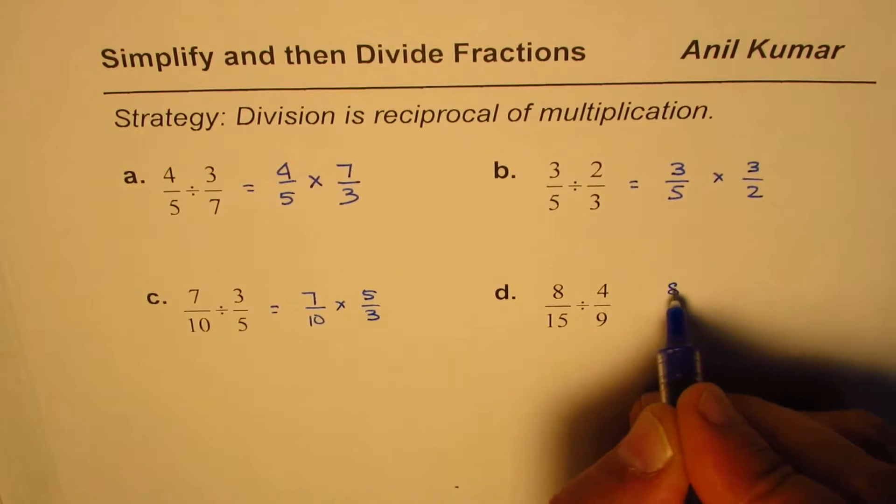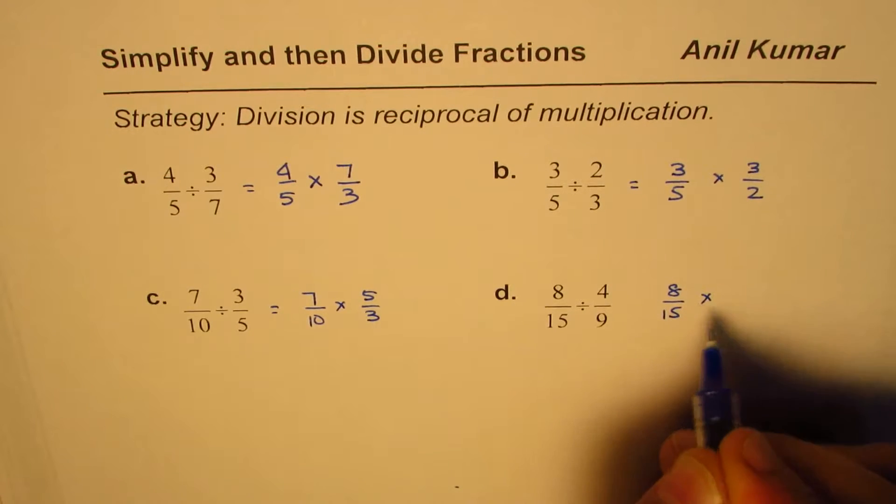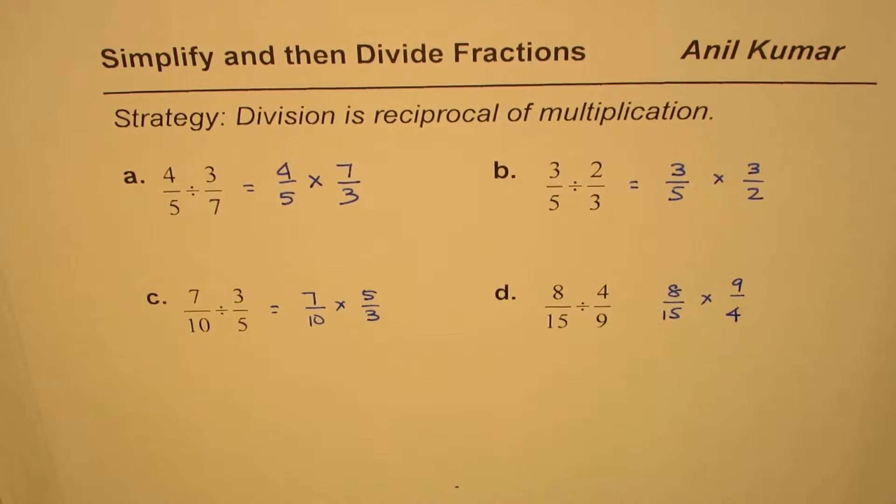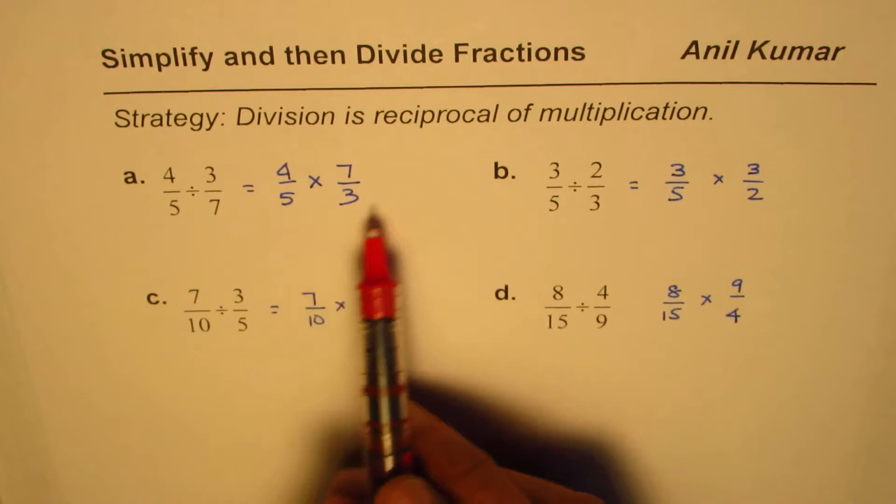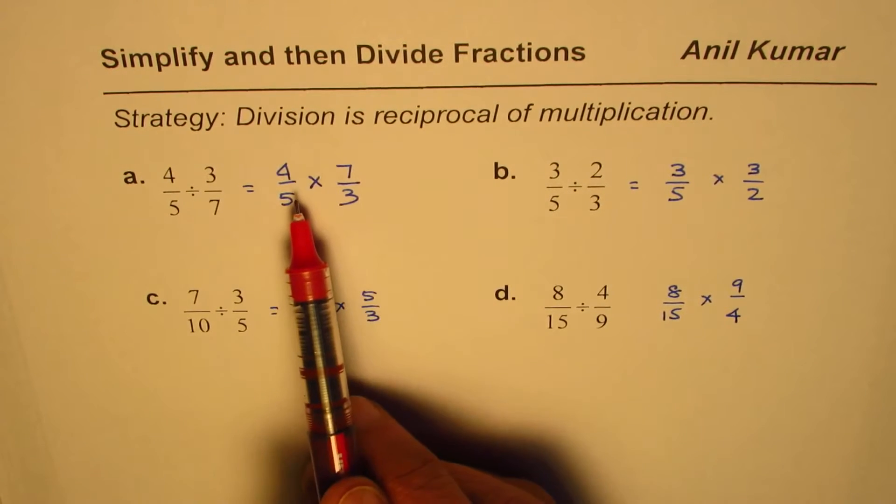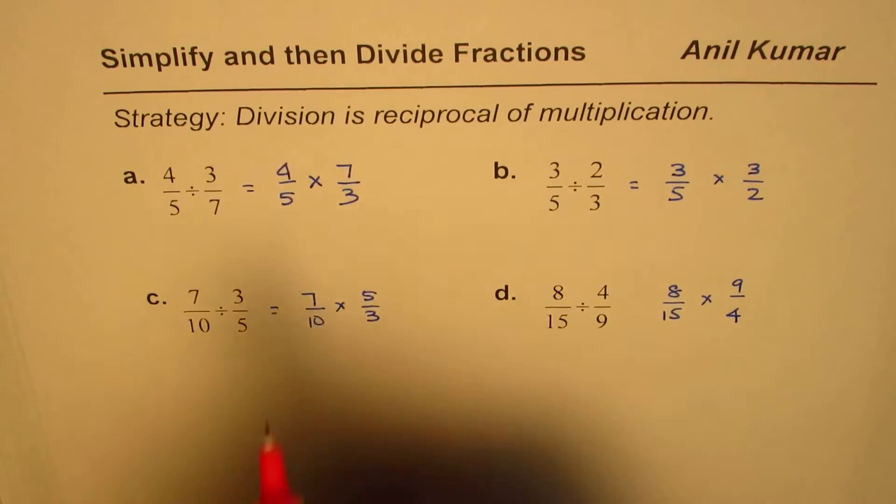Now we need to multiply them effectively. Our strategy is to first simplify. For 4/5 × 7/3: checking 4, 7, 5, 3, there are no common factors to simplify. So we'll multiply straight away: 7 × 4 is 28, and 5 × 3 is 15.